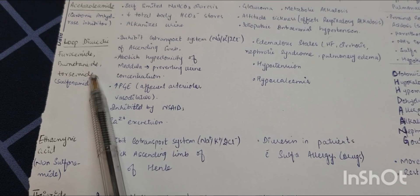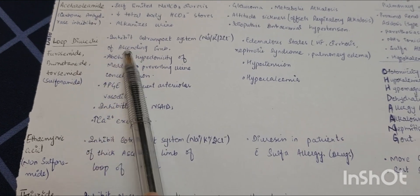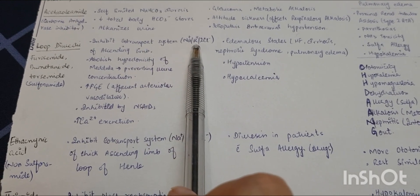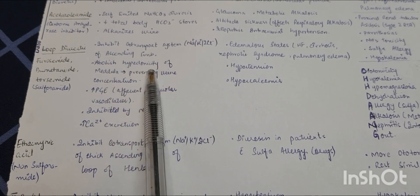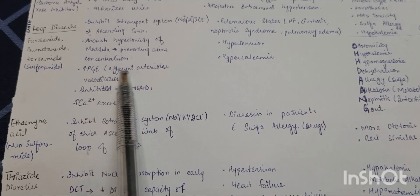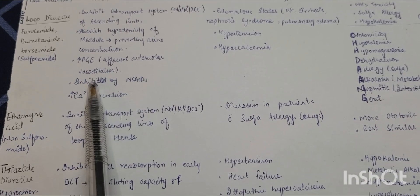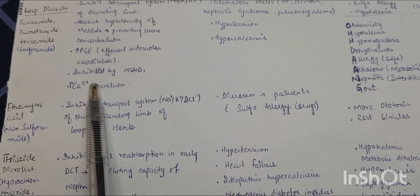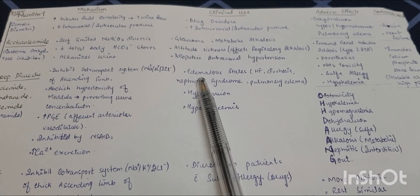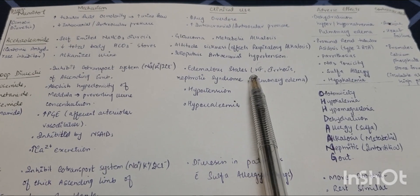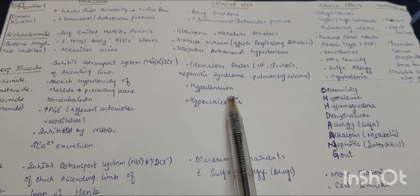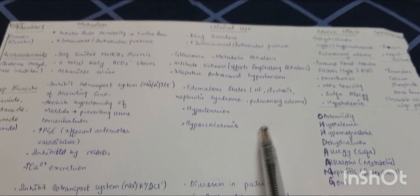The next group is loop diuretics, which include furosemide, bumetanide, torsemide, etc. Their main mechanism is inhibition of the co-transport system that transports sodium, potassium, and two chloride ions in the ascending limb, abolishing hypertonicity of the medulla and preventing urinary concentration. They also increase prostaglandin E effect on afferent arteriolar vasodilation — which is inhibited by NSAIDs — and increase calcium excretion. Clinical uses include edematous states such as heart failure, cirrhosis, nephrotic syndrome, pulmonary edema, hypertension, and hypercalcemia.